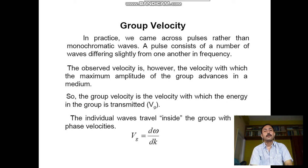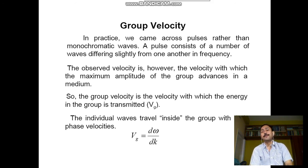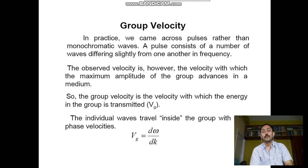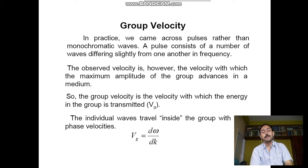Group velocity: in practice, we encounter pulses rather than monochromatic waves. A pulse consists of a number of waves differing slightly from one another in frequency. The observed velocity is the velocity with which the maximum amplitude of the group advances in a medium. Group velocity is the velocity with which the energy of the group is transmitted, represented as vg. The individual waves travel inside the group with their phase velocities. vg = dω/dk, whereas vp = ω/k.